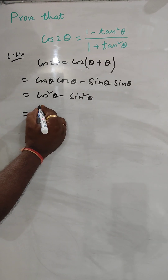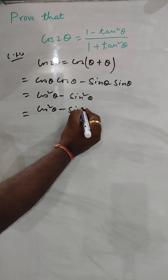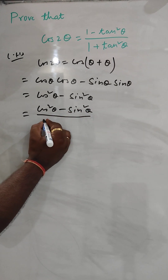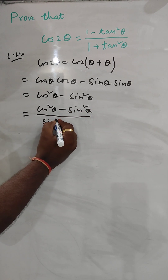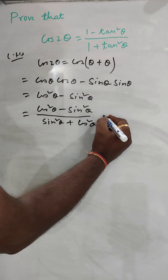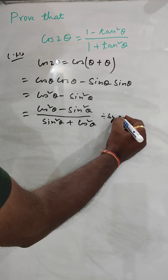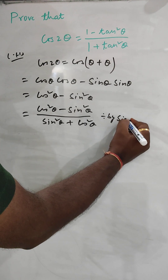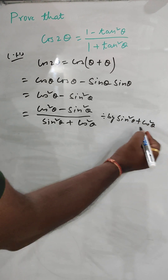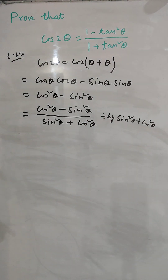So we can divide, and we write cos²θ minus sin²θ divided by sin²θ plus cos²θ. And sin²θ plus cos²θ is 1, so dividing by it is valid.